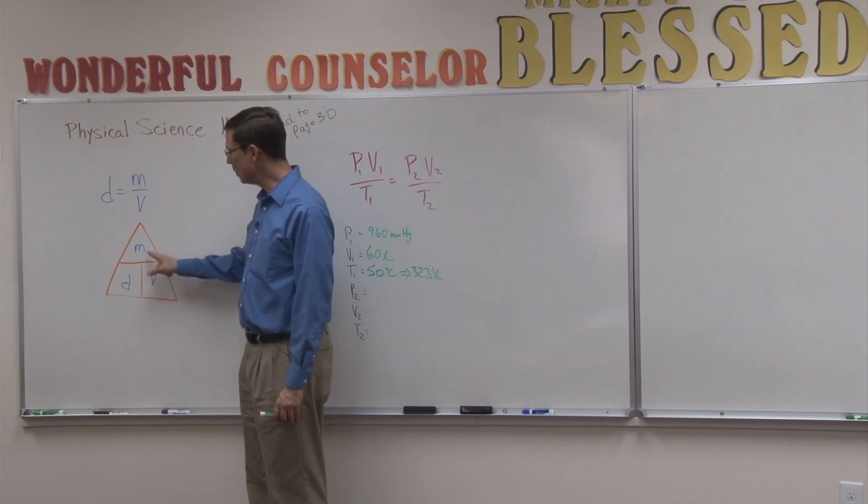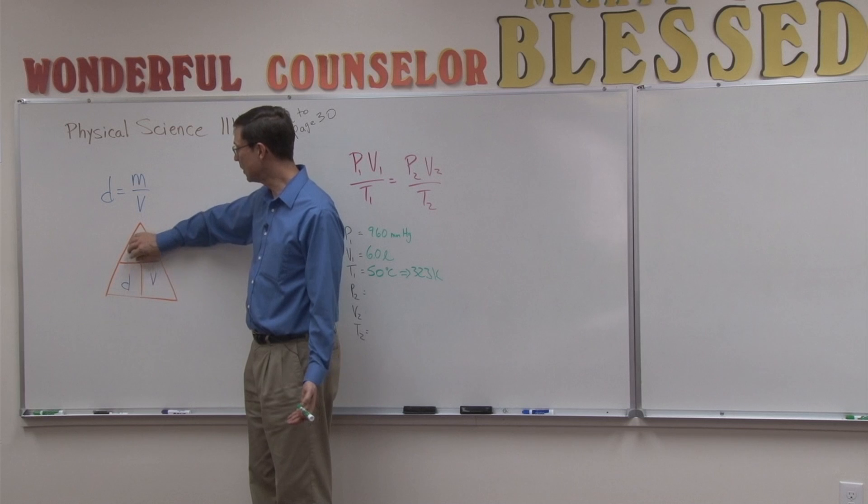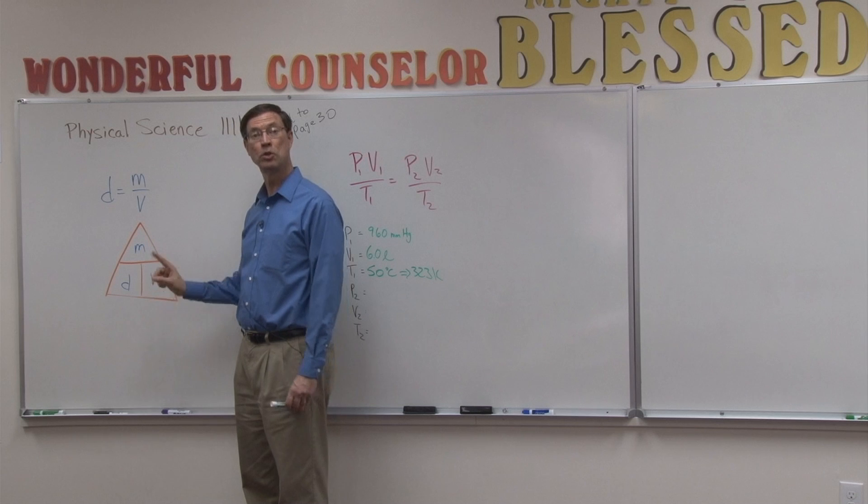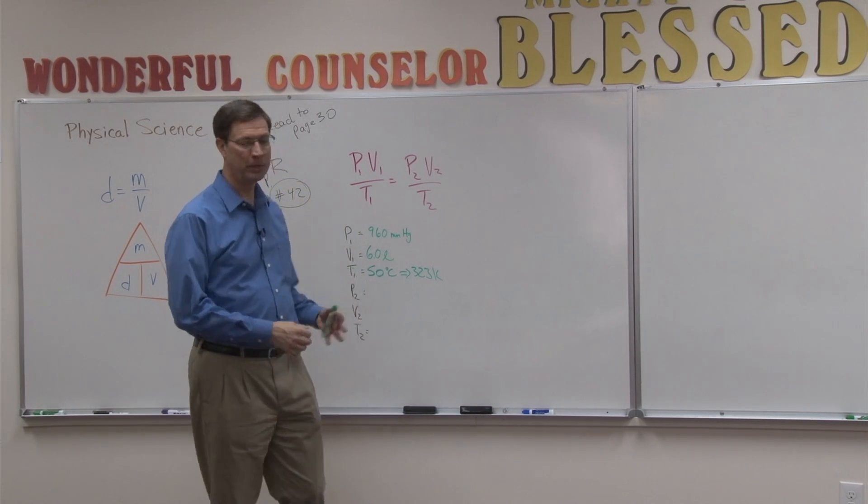And then here's what's cool. If I want to solve for mass, density and volume are side by side. So I cover up mass, multiply density times volume, and we'll have the mass. We're actually going to do that. We're going to use that part in an upcoming problem here.